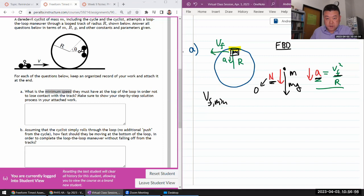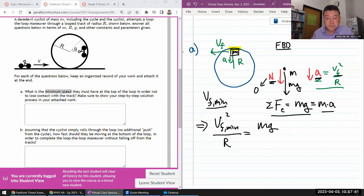So for the minimum possible speed, or minimum speed they need to have at the top, we will say the cycle is about to barely lose contact with the track. So normal force is just barely going to zero. So our net force here in the centripetal direction will be just the gravity mg. So we are saying this is equal to my mass times acceleration. We have expression for the acceleration there.